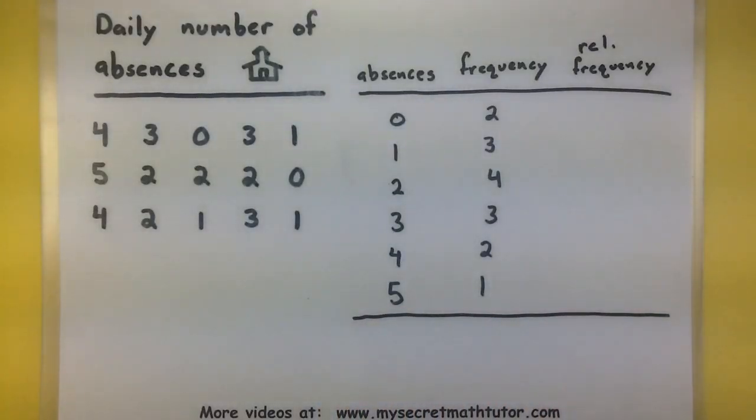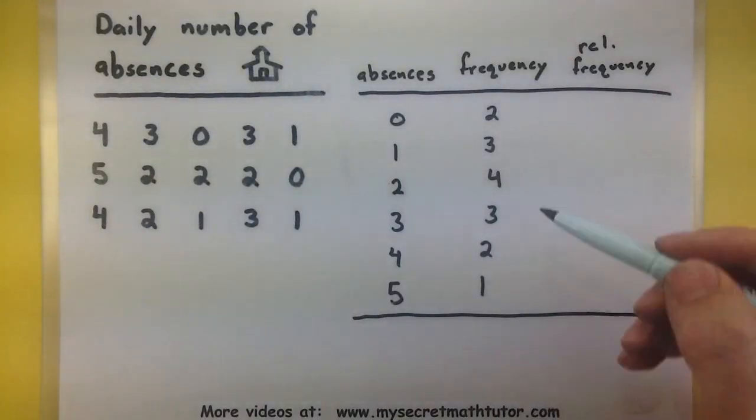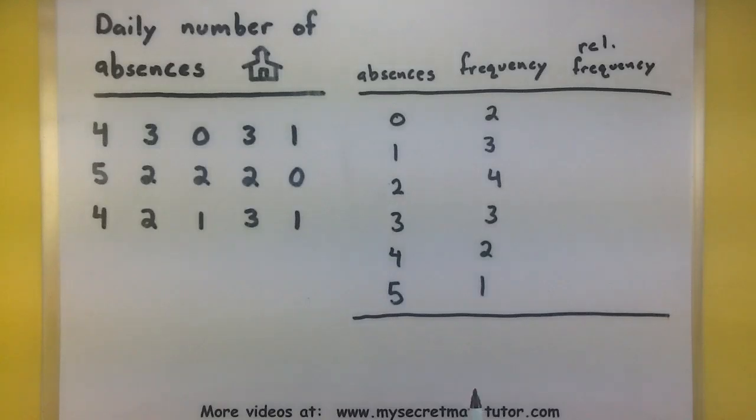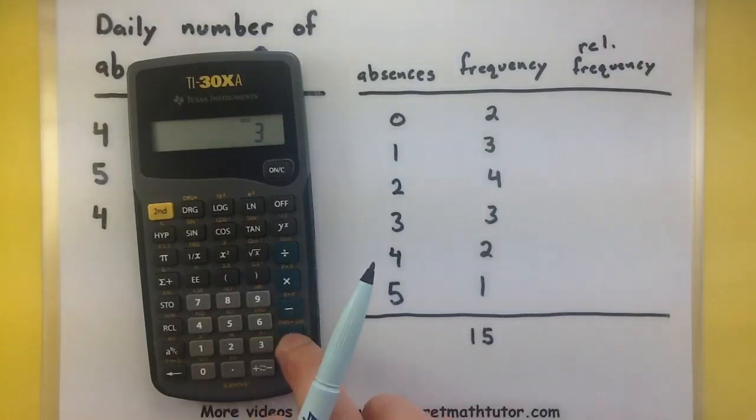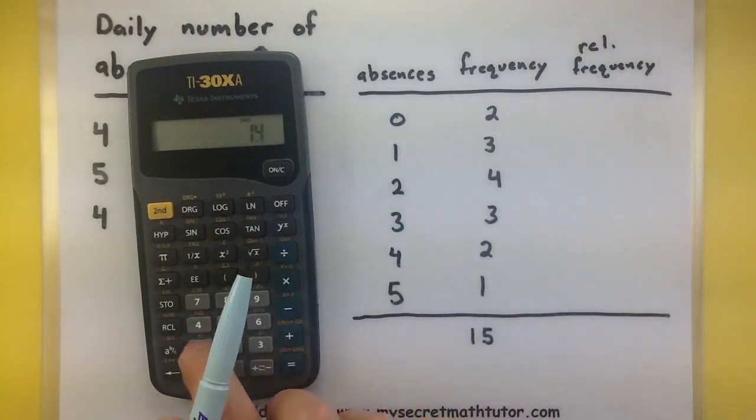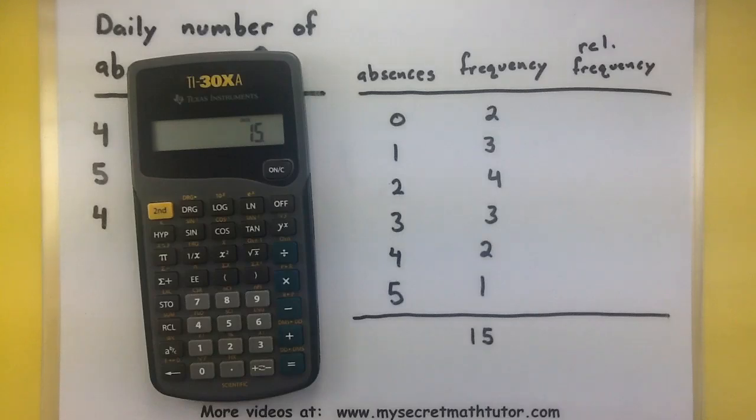So if this was just a normal frequency chart, I'd stop right there. But now we're going to calculate the relative frequency for each of our absences. Before we get there, I need a total amount of frequency, and this should be the same number as the number of data points I have. So I can say I have 15 days here, this should be 15. To catch any mistakes that you may have made at this point, go ahead and run through and add up these values to make sure that they do add up to 15. If they don't, you can double check to make sure that you've written the right number. All right, so I'm at 15, I know I'm on the right track.